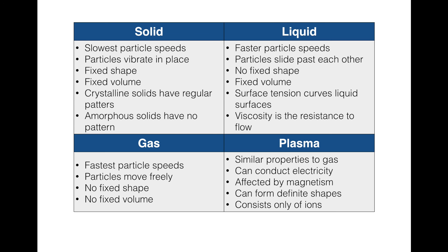Let's finish the graphic organizer. Plasma has similar properties to a gas with really high particle speeds at higher temperatures than gases. Plasma can conduct electricity, is affected by magnetism, and when under that magnetic effect it can form definite shapes. It consists not of atoms and molecules but of ions — particles with a charge. So that's the lesson on the four states of matter: solids, liquids, gases, and plasmas. Remember, the state of matter depends on the amount of energy the substance has.